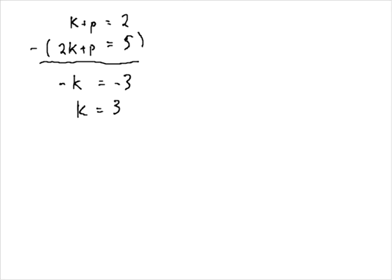So if k equals 3, we just have to go put it back into one of our equations. And let's put it into the first one, 3 plus p is equal to 2. So p is going to equal 2 minus 3. So p is going to equal minus 1. There's our k value. There's our p value. And we have solved it using the remainder theorem.